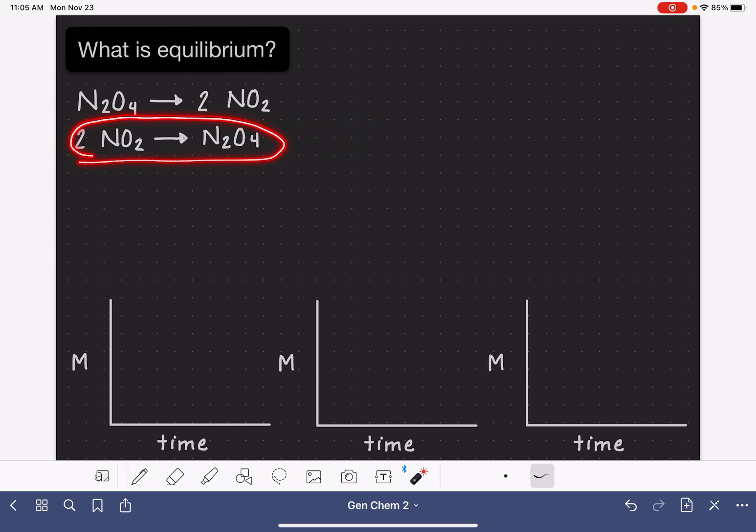When this process starts happening, it also doesn't go to completion, meaning that we don't take all of these and just turn them all back into N2O4. Instead, we reach a point of balance where some of the N2O4 molecules are decomposing to form NO2, and some of the NO2 molecules are combining to form N2O4. And at any given time, we have a little bit of everything present.